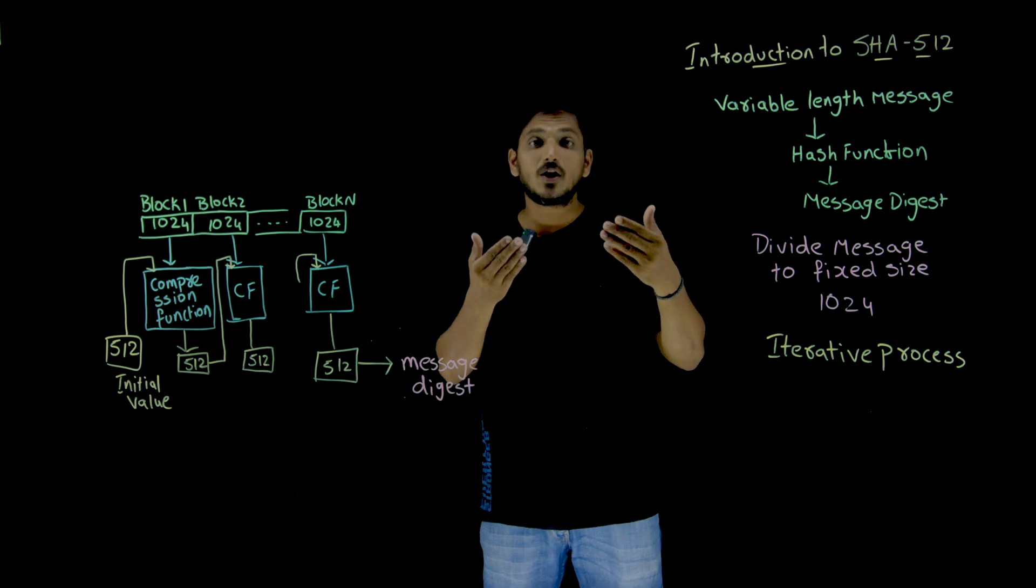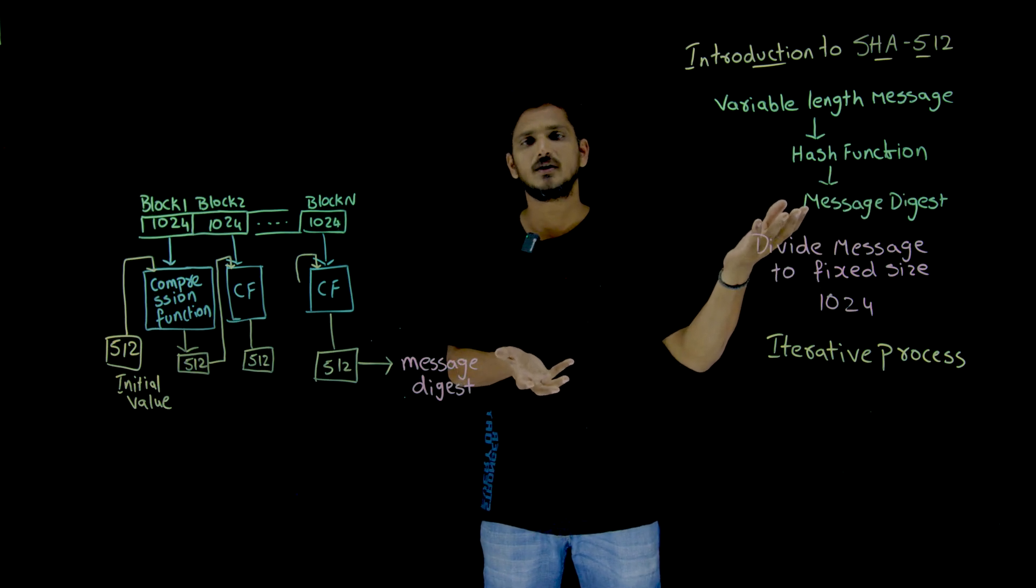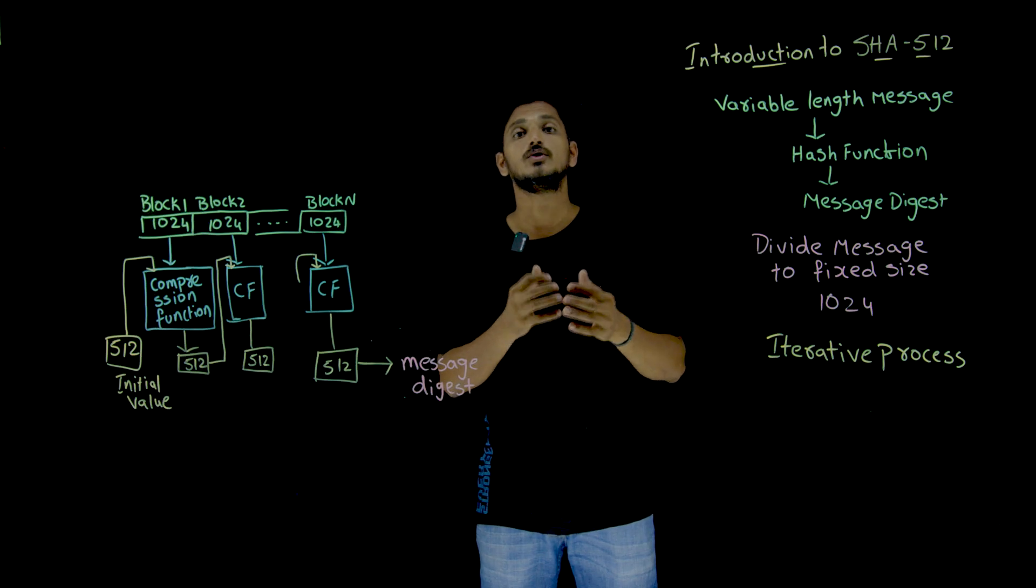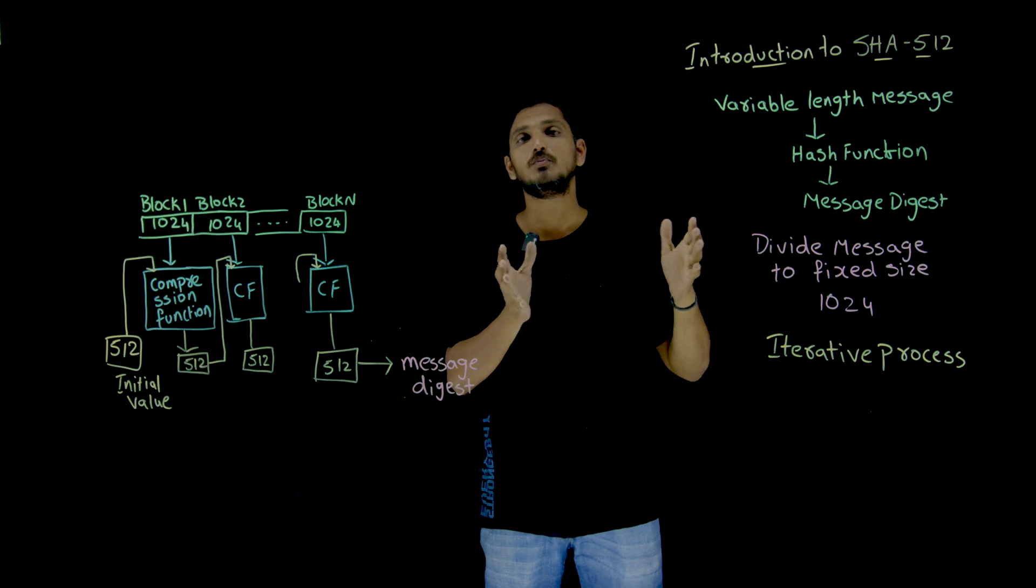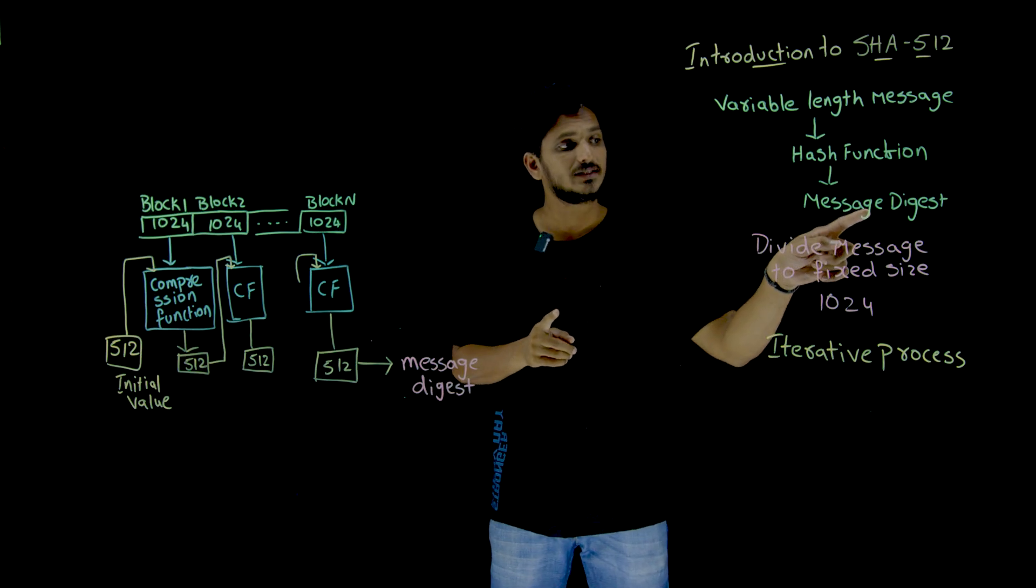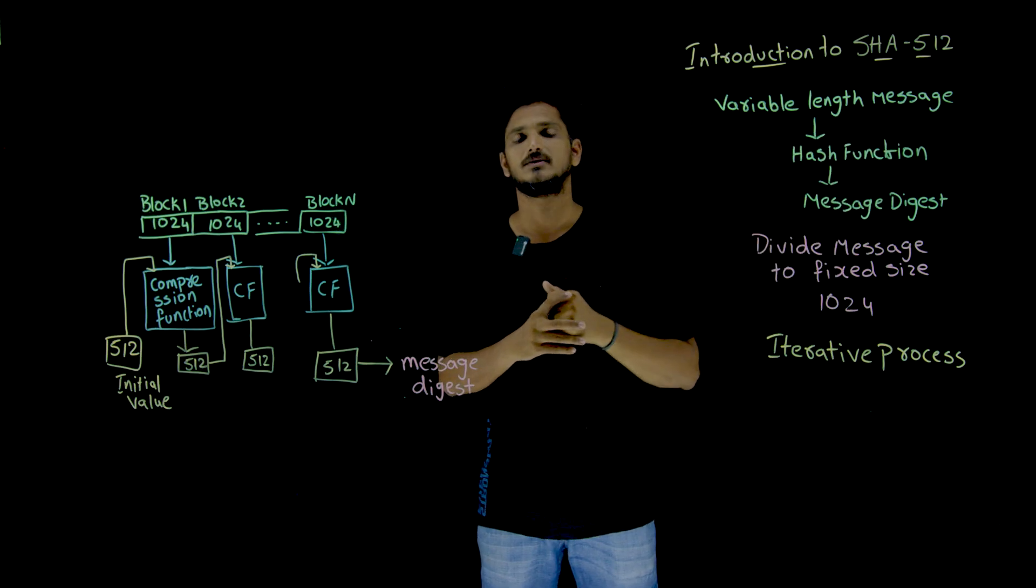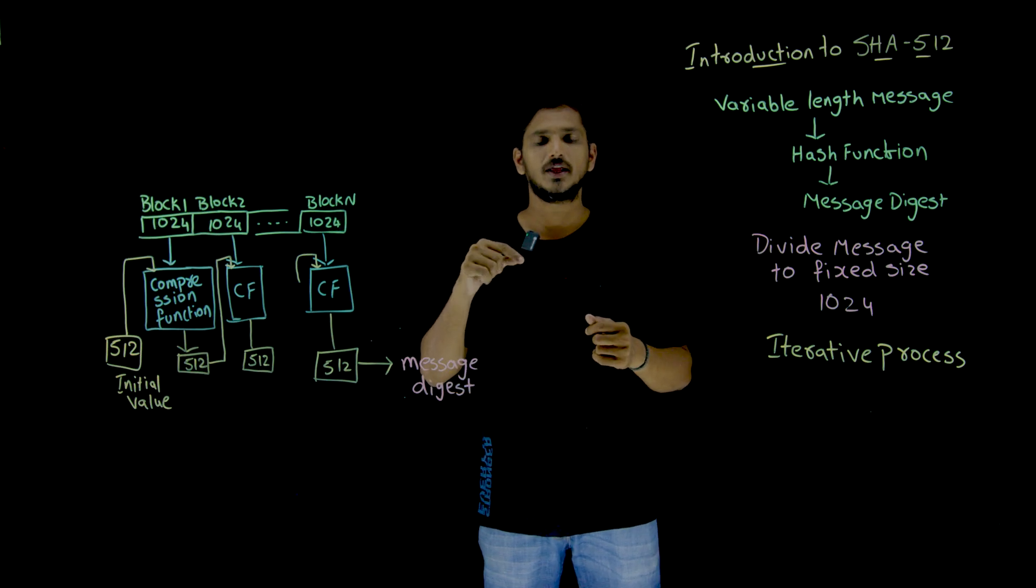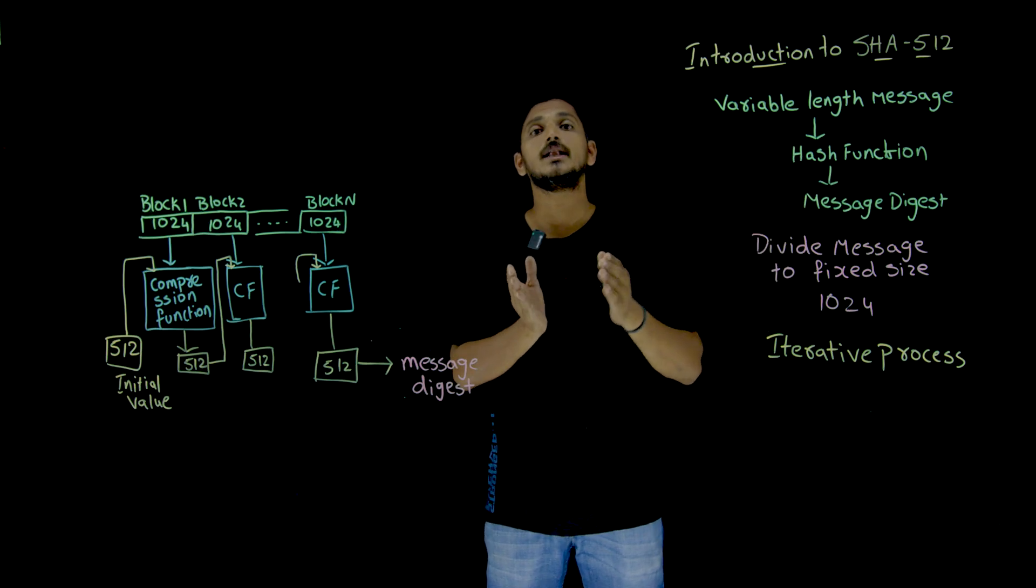Similarly, writing a logic on variable length message in this hash function is very difficult. We don't know which length we are going to get. So that's why our message, variable length message, should be divided into blocks. And one more point you need to understand: here, the message digest should be completely dependent on the entire message. So for that reason, they generated this hash function algorithm based on iterative method.